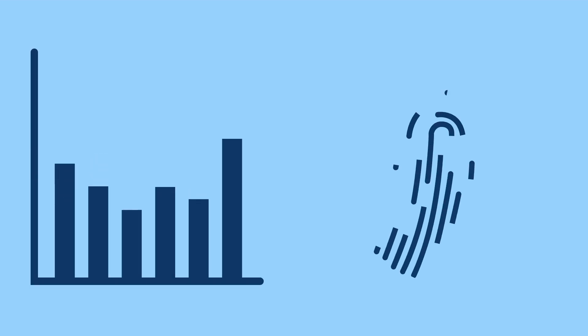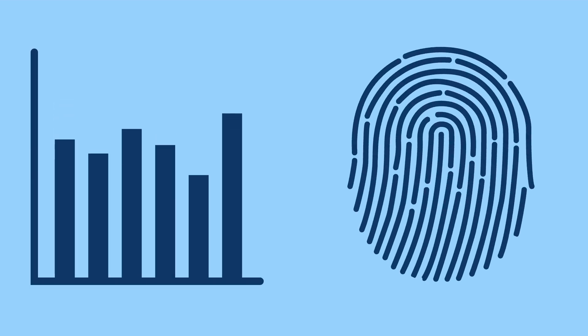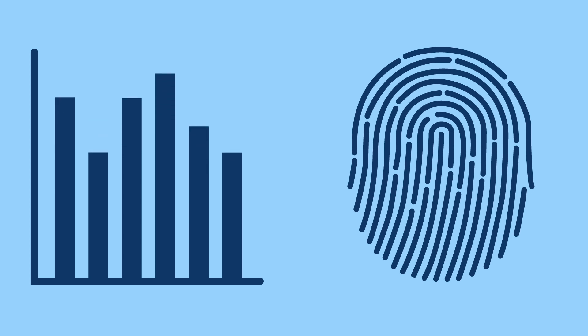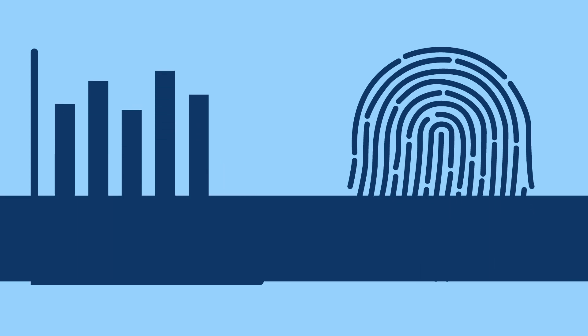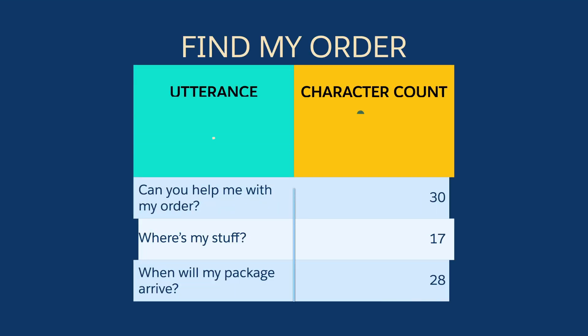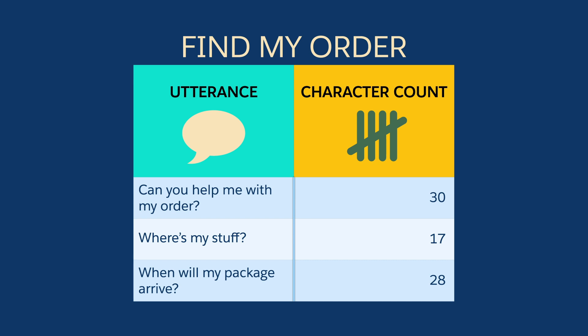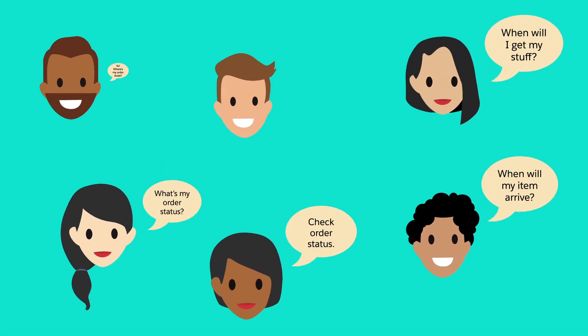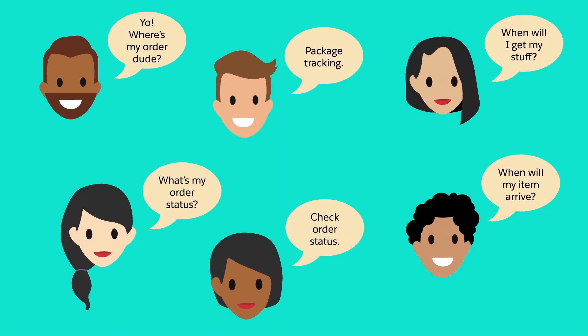Create high-quality utterances that are varied and unique to ensure that your bot understands your customers. Limit utterances to 250 characters or less and vary the word lengths. To naturally vary your utterances, try crowdsourcing them by asking your coworkers for ideas.